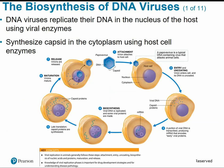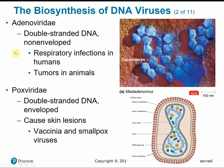DNA viruses replicate their DNA in the nucleus of the host using viral enzymes and synthesize capsid and other proteins in the cytoplasm using host cell enzymes. Some examples of DNA viruses include adenoviridae — double-stranded DNA, non-enveloped viruses causing typical acute respiratory diseases like the common cold. Poxviridae is a double-stranded DNA virus with an envelope causing skin lesions in cowpox and smallpox. Herpesviridae is double-stranded DNA and enveloped, with several strains including herpes simplex viruses causing cold sores.